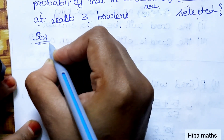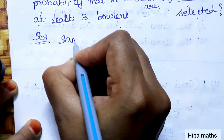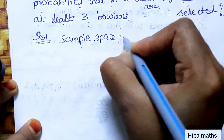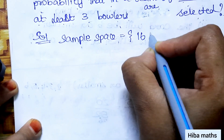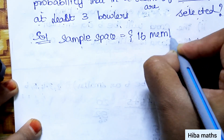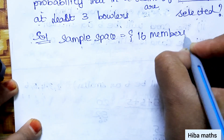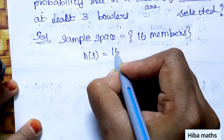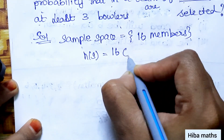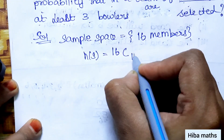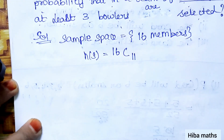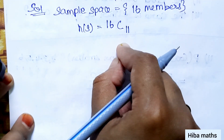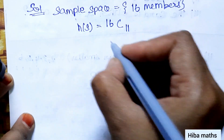First, the sample space is equal to selecting 11 members from a total of 16 members. So n(S) = 16C11. In the combination, we can solve this.